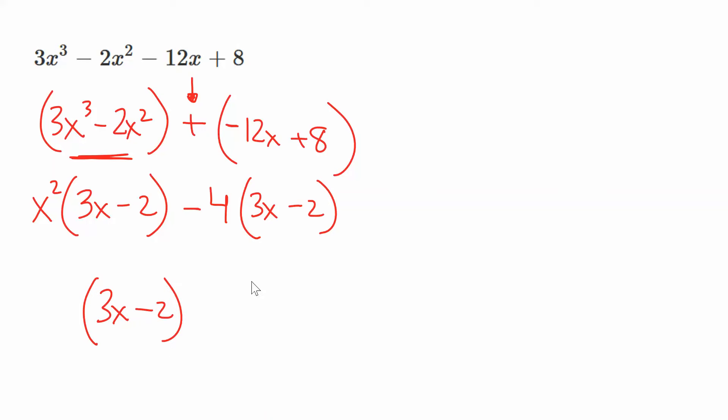Leftovers. Now the question is, can we factor this down any more? Yes, we can. x squared minus 4 really is x plus 2, x minus 2. Let's see if we can put that in. 3x minus 2, x plus 2, x minus 2.